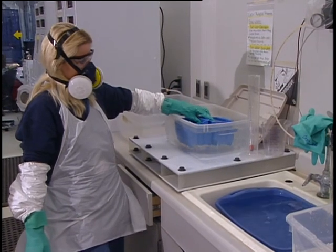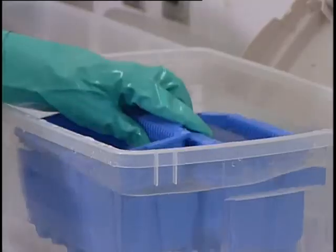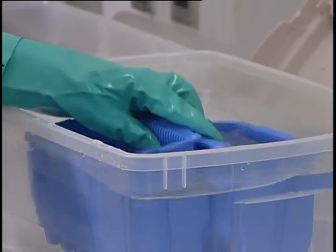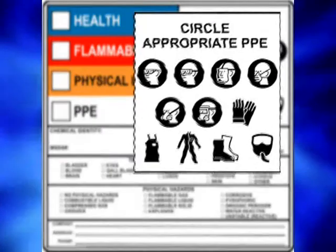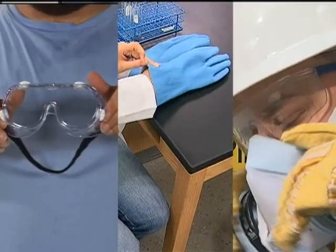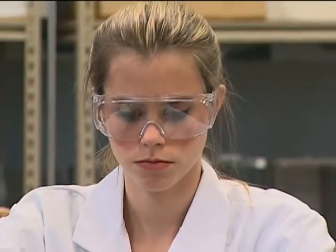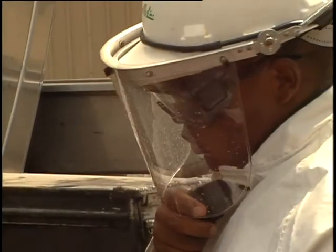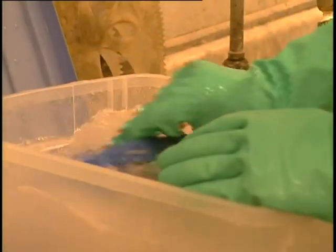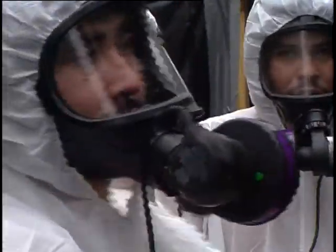To reduce the potential for risk of exposure, PPE should be worn that is appropriate for the chemical being used. Information on the correct PPE can be found on the chemical's label as well as the SDS. PPE is generally divided into three groups: eye protection — safety glasses, goggles, and face shields; hand and body protection — gloves and aprons; and respiratory — respirators, masks, and self-contained breathing apparatus.